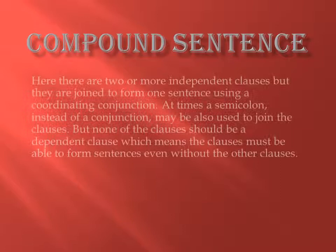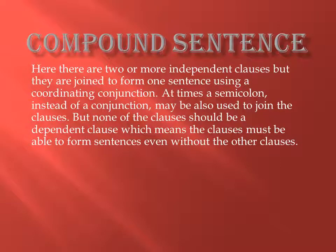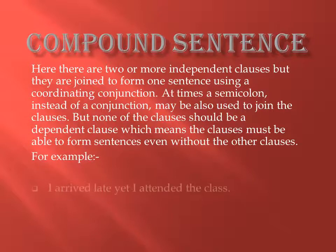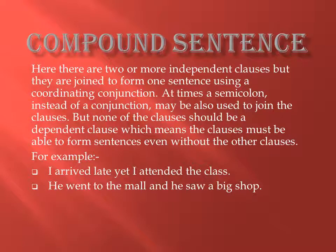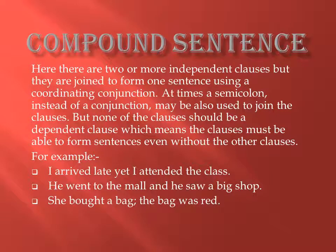The next one is compound sentence. There are two or more independent clauses joined to form one sentence using coordinating conjunctions. At times, a semicolon instead of a conjunction may also be used to join the clauses. None of the clauses should be a dependent clause, meaning the clauses must be able to form sentences even without the other clause. For example: I arrived late, yet I attended the class. He went to the mall and he saw a big shop. She bought a bag. The bag was red.